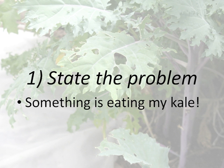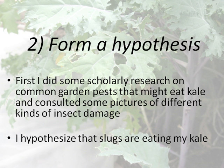Step one is to state the problem. In this case, it was relatively easy: something is eating my kale. Step two is to form a hypothesis. I did some scholarly research on common garden pests that might eat kale and consulted some pictures of different kinds of insect damage. Based on those findings, I hypothesized that slugs are eating my kale.